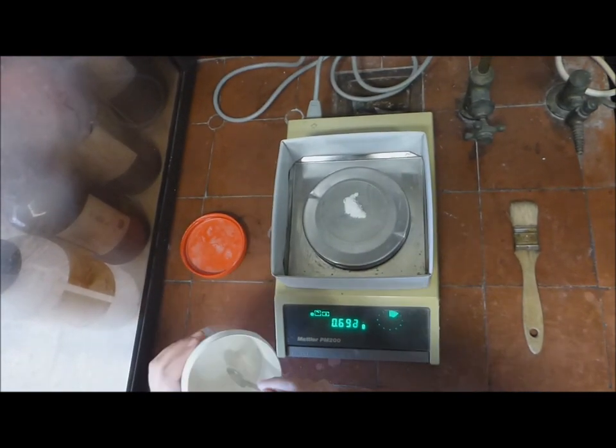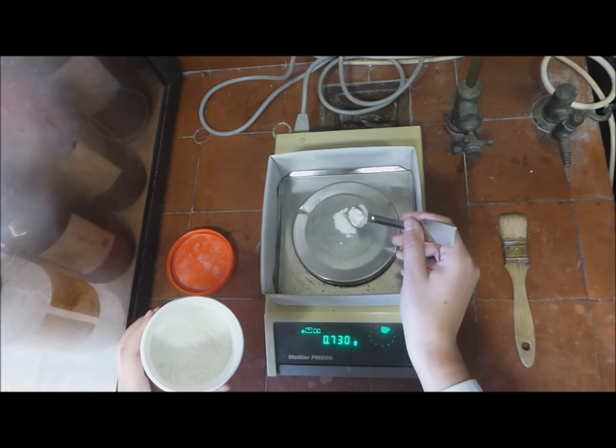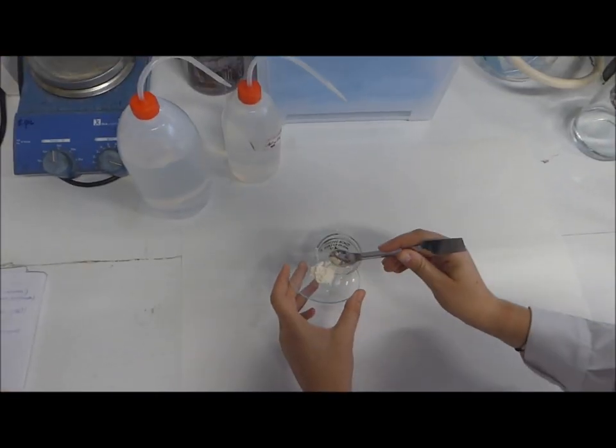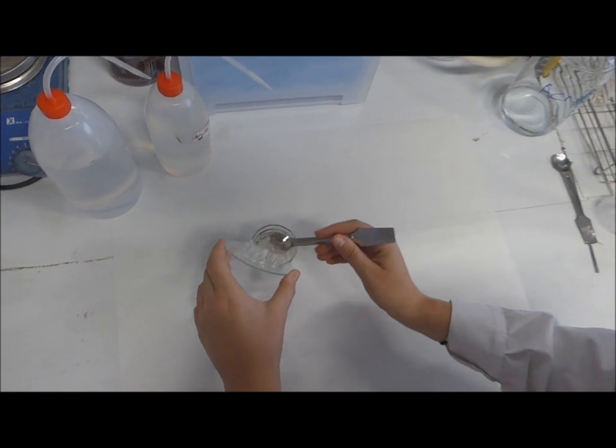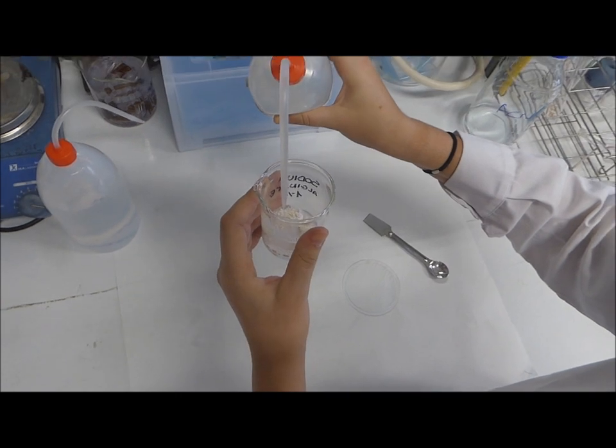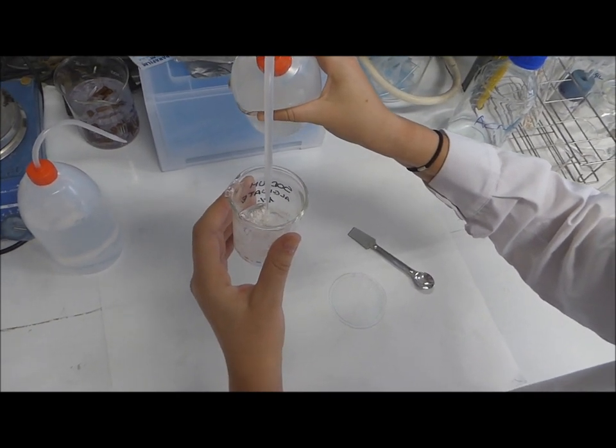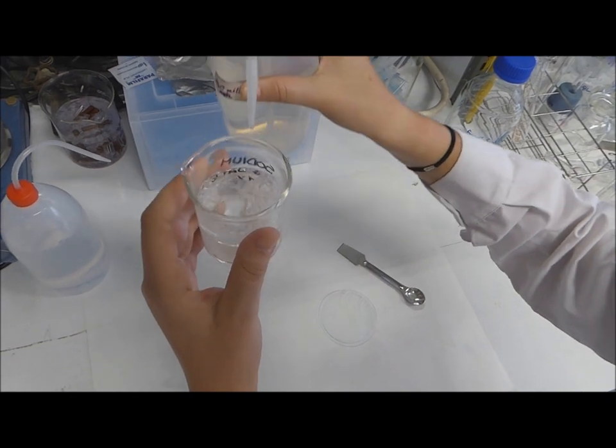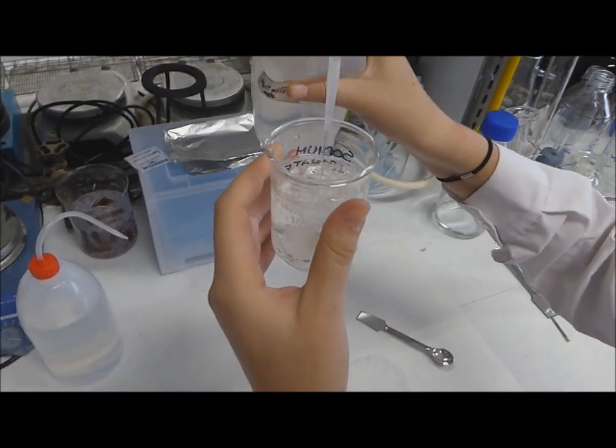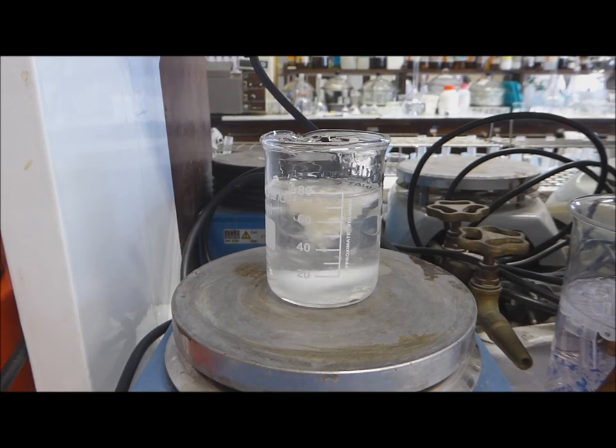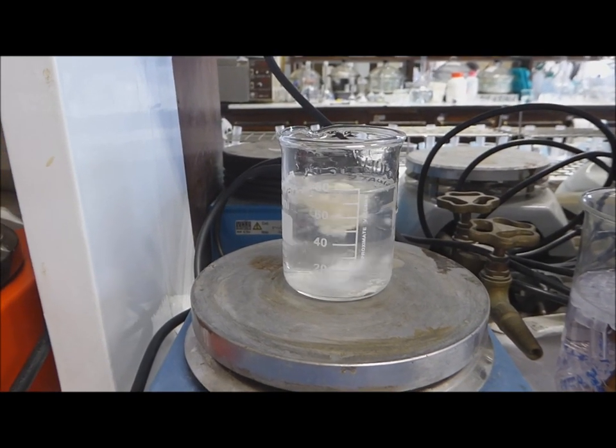We have to weigh one gram of sodium alginate in a tumbler of 100 milliliters. Next we add distilled water until 100 milliliters. We use a magnetic agitator to get a complete dissolution.